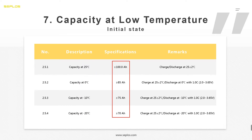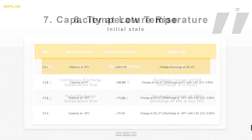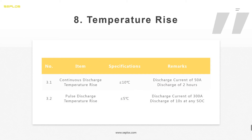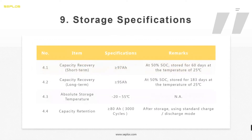Capacity at low temperature means that at different temperatures the cell will show different capacity. Before you design your battery pack, you need to confirm your working temperature first — this way you will get the real usable power of your battery pack. For temperature rise, you also need to pay attention to this section to make sure your working temperature is within the specified requirement.